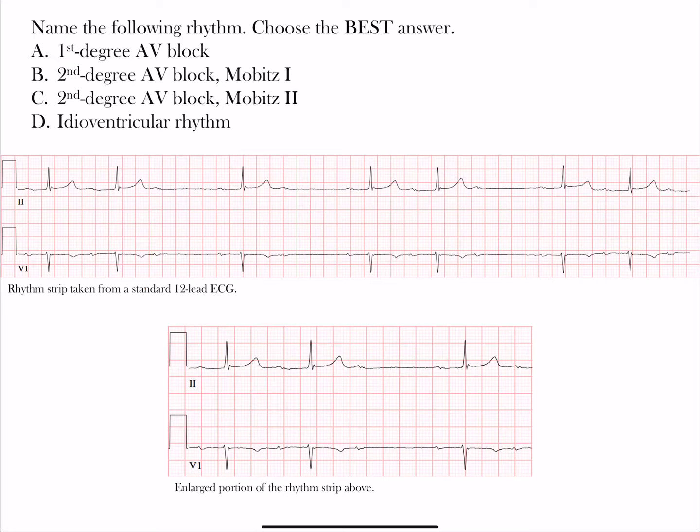Welcome back, here we have another rhythm. Name the following rhythm and choose the best answer. Our choices are: A) first degree AV block, B) second degree AV block Mobitz Type 1 or Wenckebach, C) second degree AV block Mobitz Type 2, or D) idioventricular rhythm. Let's go through these.